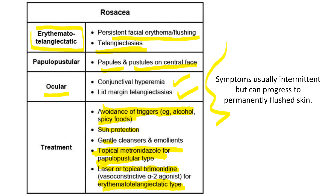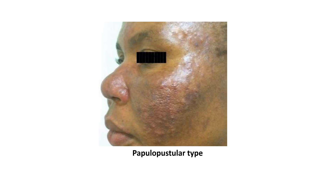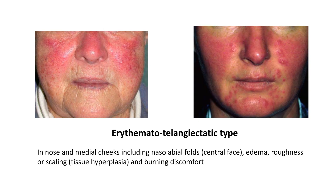Initially the symptoms are intermittent, but they can become permanent over time, leading to permanent flushed skin. This is an example of the papulopustular type — we can see many pustules. This is the erythematotelangiectatic type — we can see redness and spots from new blood vessels, involving the nose, medial cheeks, and nasolabial fold. Edema, roughness, scaling, and burning discomfort may also be present.